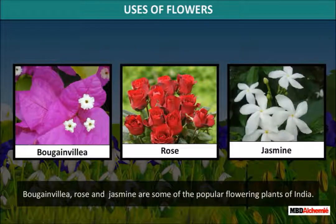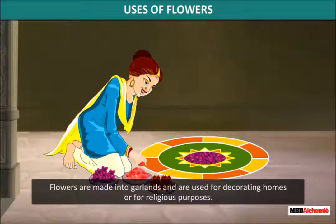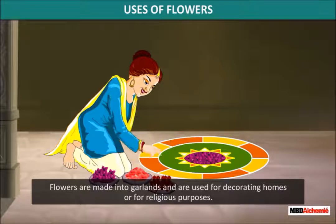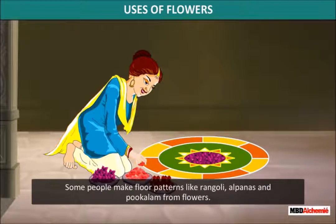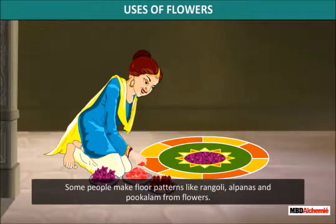The scented flowering plants of India add charm to the natural beauty of the country. Bougainvillea, rose, and jasmine are some of the popular flowering plants of India. Flowers are made into garlands and are used for decorating homes or for religious purposes. Some people make floral designs like rangoli, alpanas, and pukalam from flowers.